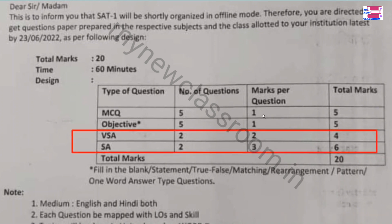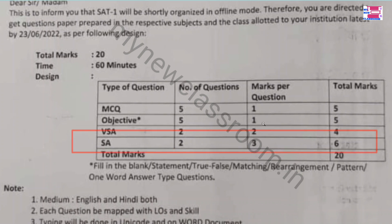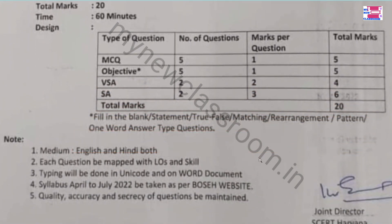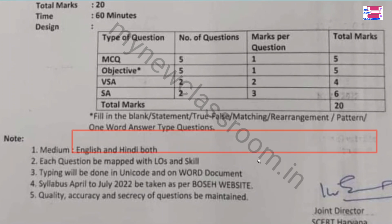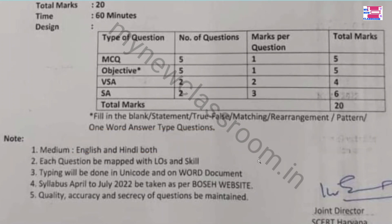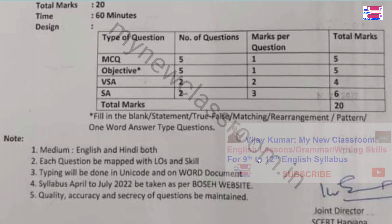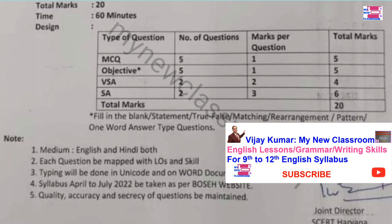Short answer type questions — 2 questions will be there of 3 marks each, to be answered in 40 to 50 words. The question paper will be in both English and the regional medium. Each question will be mapped with Allows Learning Outcomes (ALOs) and will be related to types of thinking.